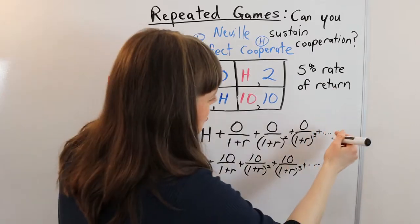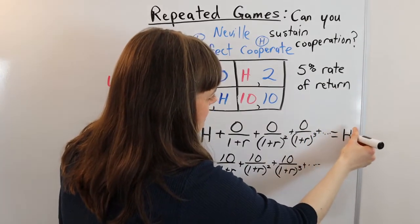So if we solve for this, of course, that's going to equal H is her payoff from defecting.